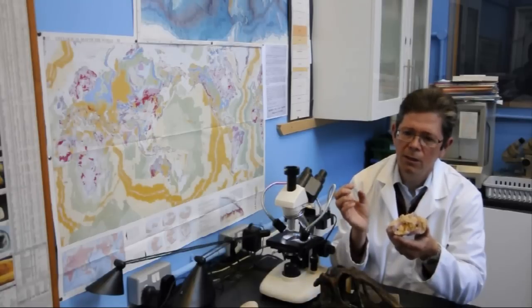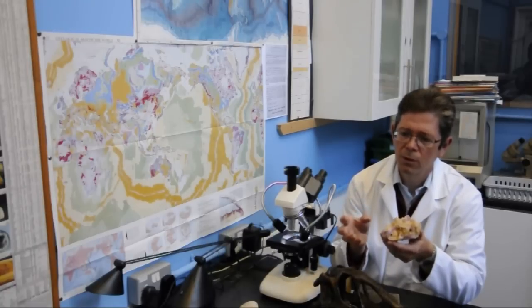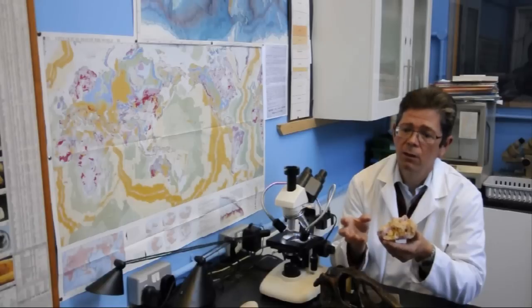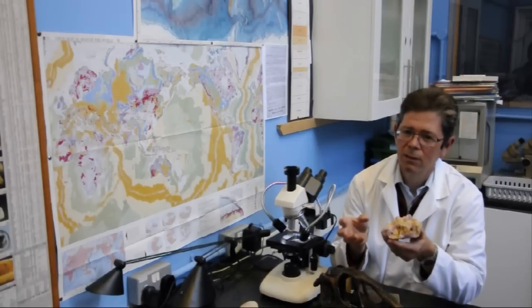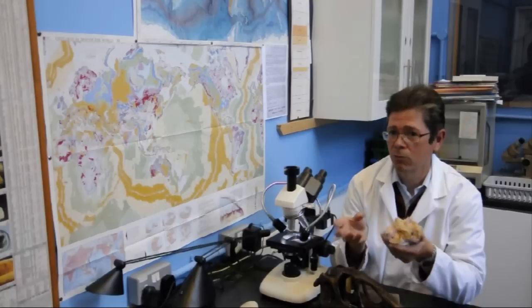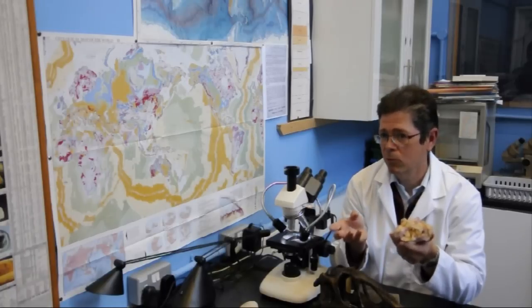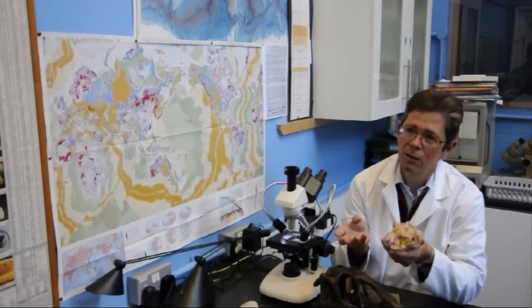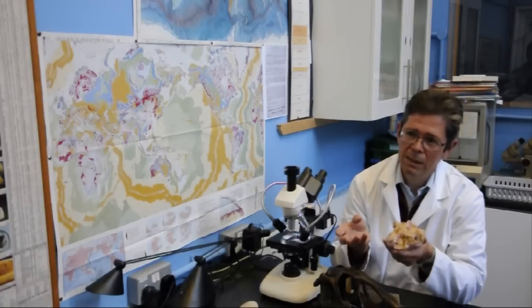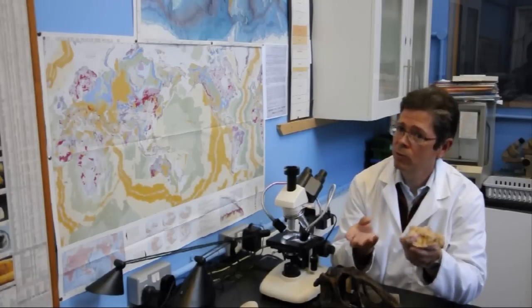But the mixture of minerals that form a rock is also variable. So certain minerals will form a rock called granite, and that would be a mineral called quartz, a mineral called mica, and usually a mineral called feldspar. Whereas other minerals will form other rocks.